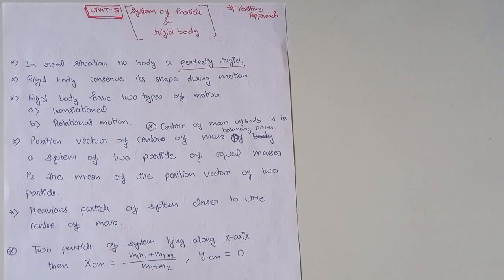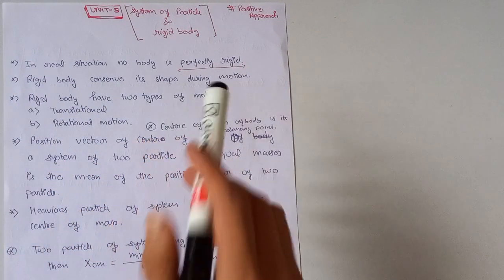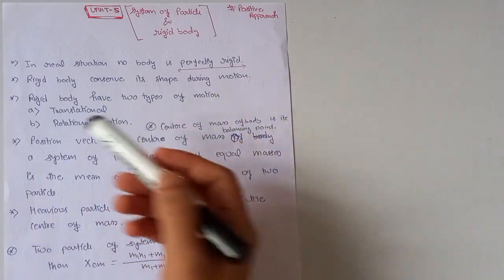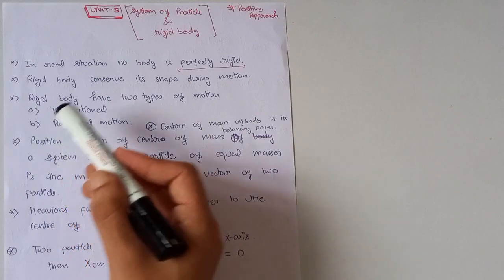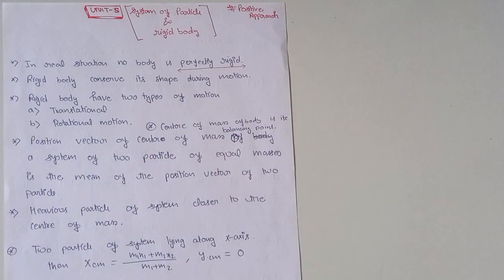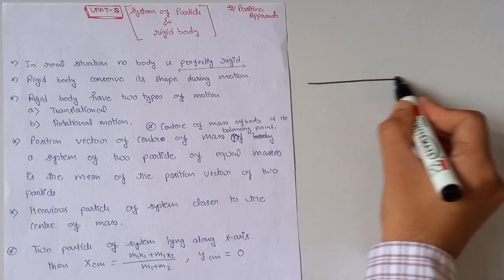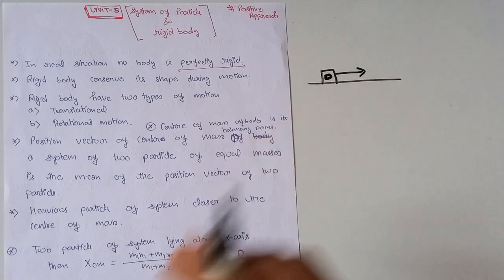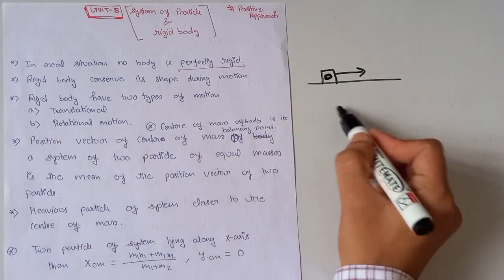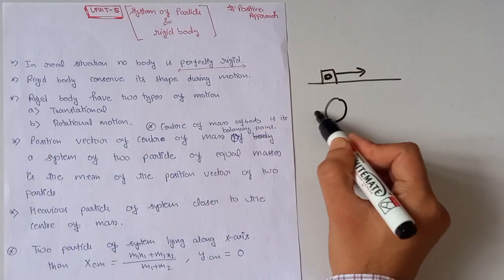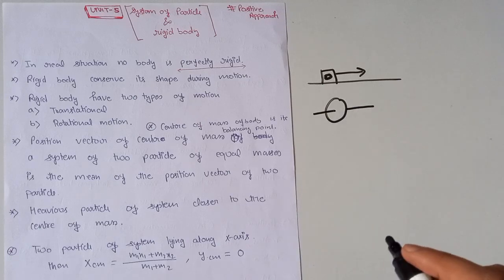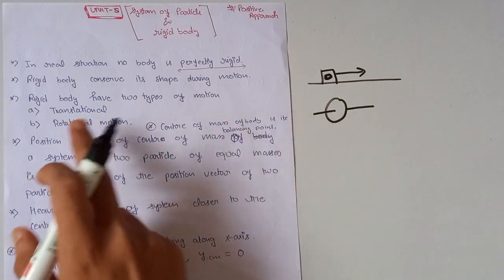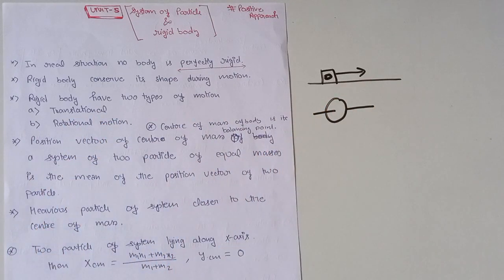The next important key point is that a rigid body conserves its shape during motion. Rigid body has two types of motion. The first is translational motion — when every particle of the body moves in the same direction. The second is rotational motion — when any object is rotating through an axis of rotation.